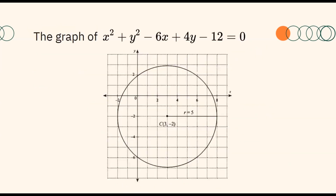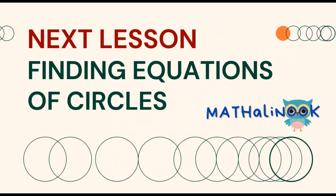Finally, the center of our circle is at (3, negative 2) and the radius is equal to 5 units. Plotting the center and radius, we can see that the center is in the fourth quadrant, and the radius is equal to 5 units. I hope that you have understood the lesson. For the next video, we will discuss about finding the equation of a circle. Thank you and see you on the next discussion.